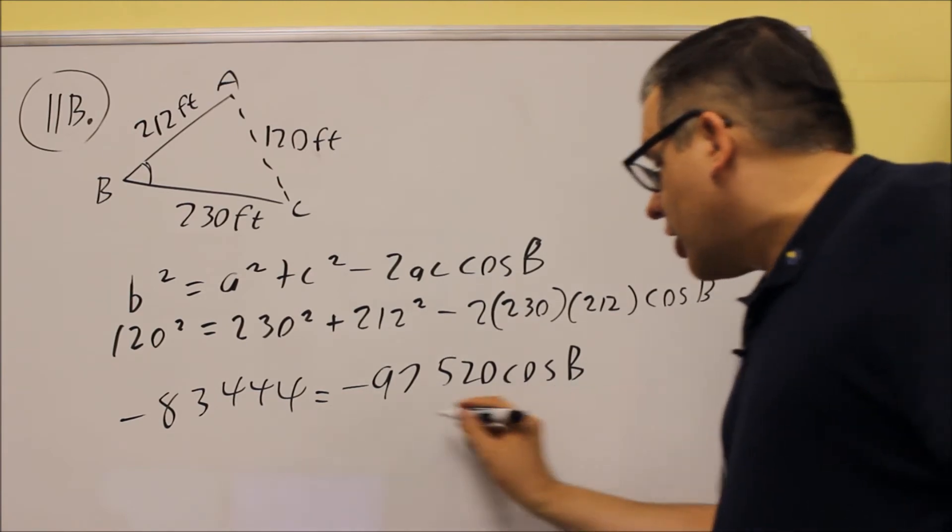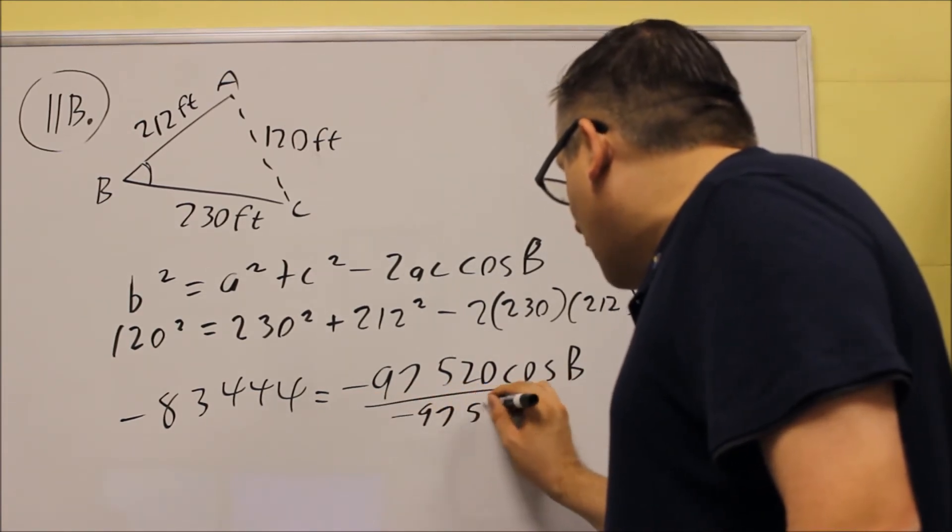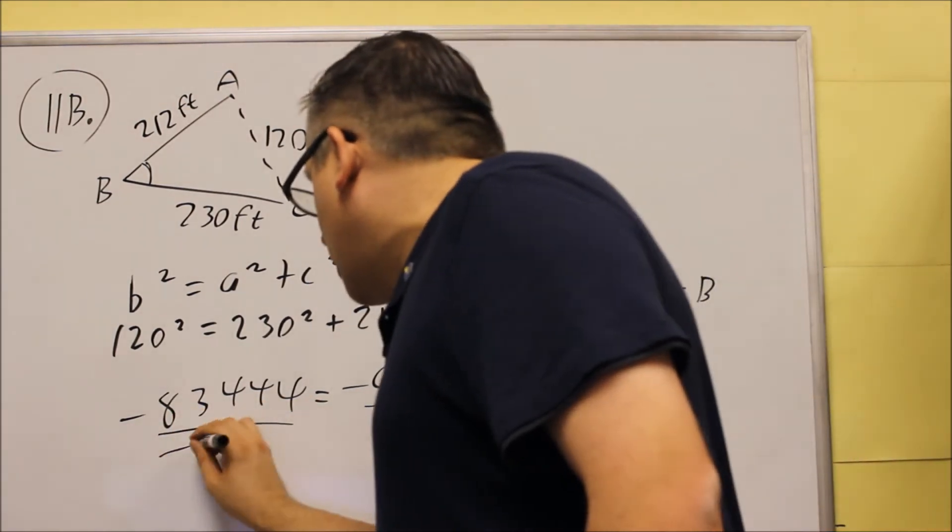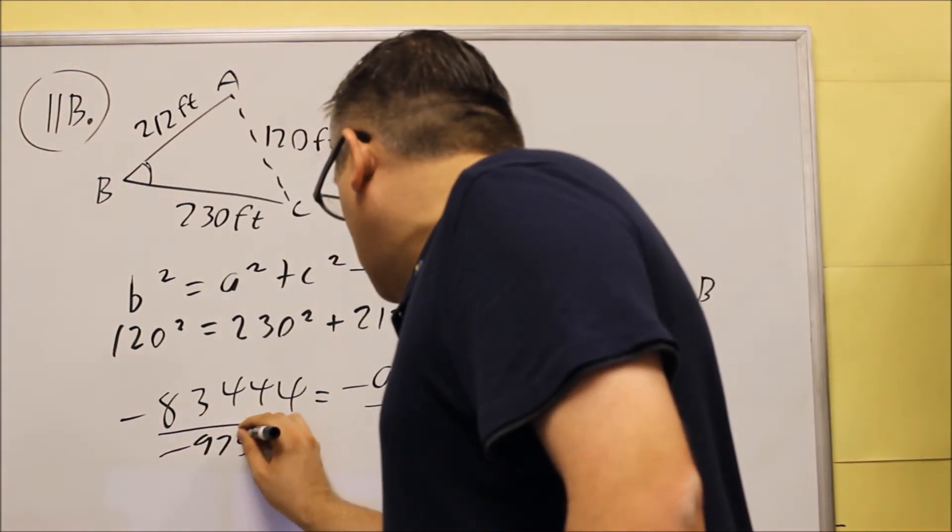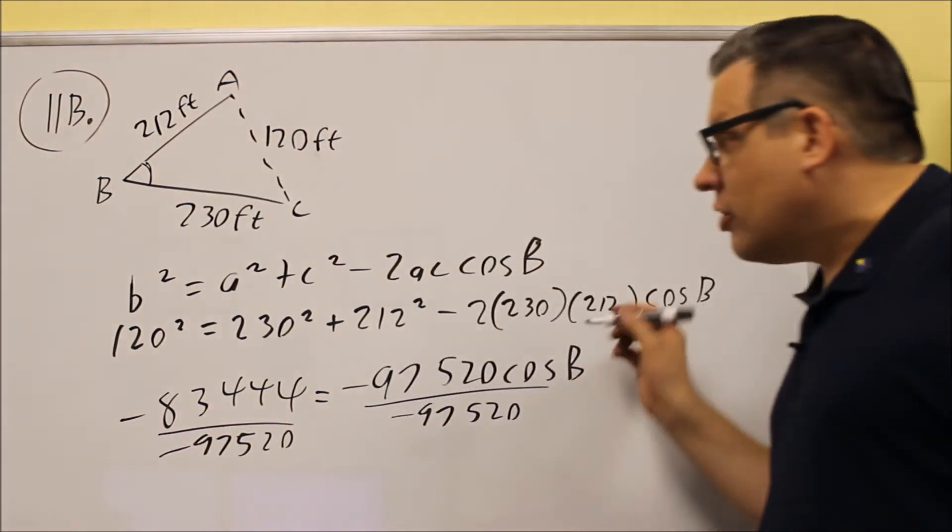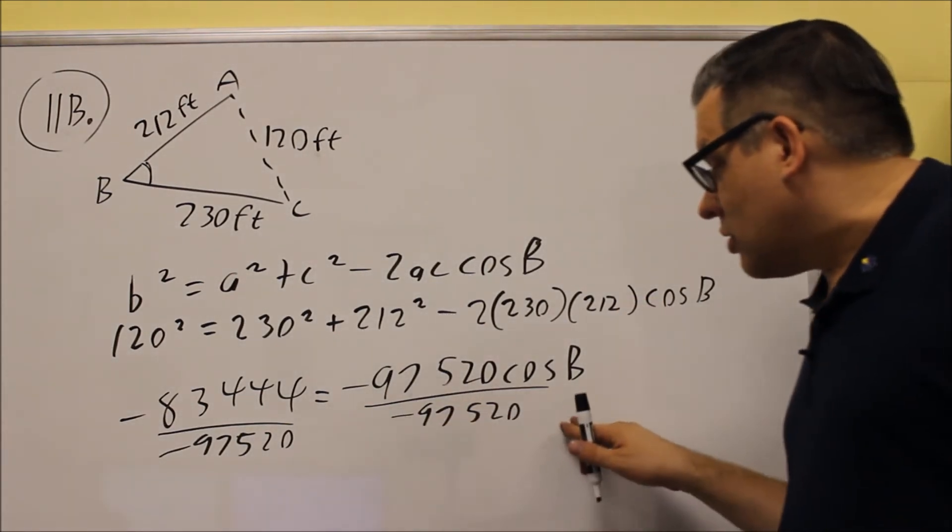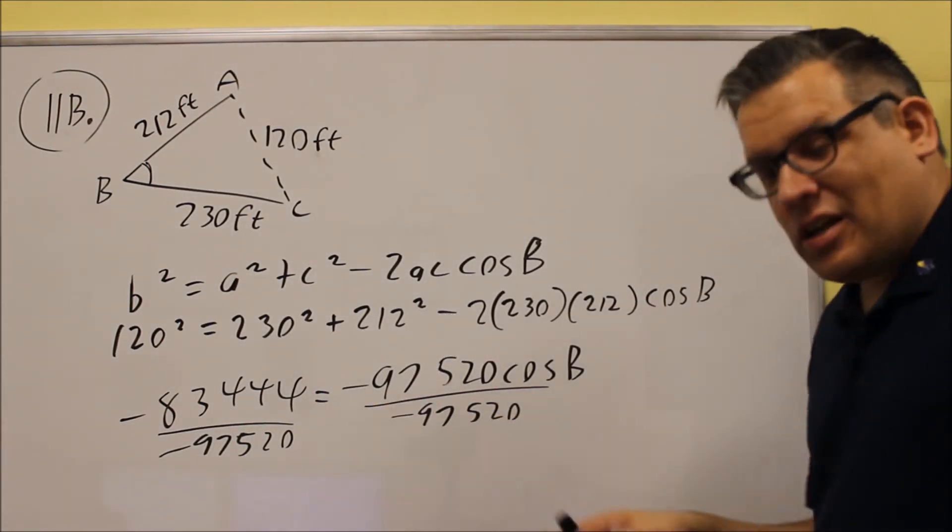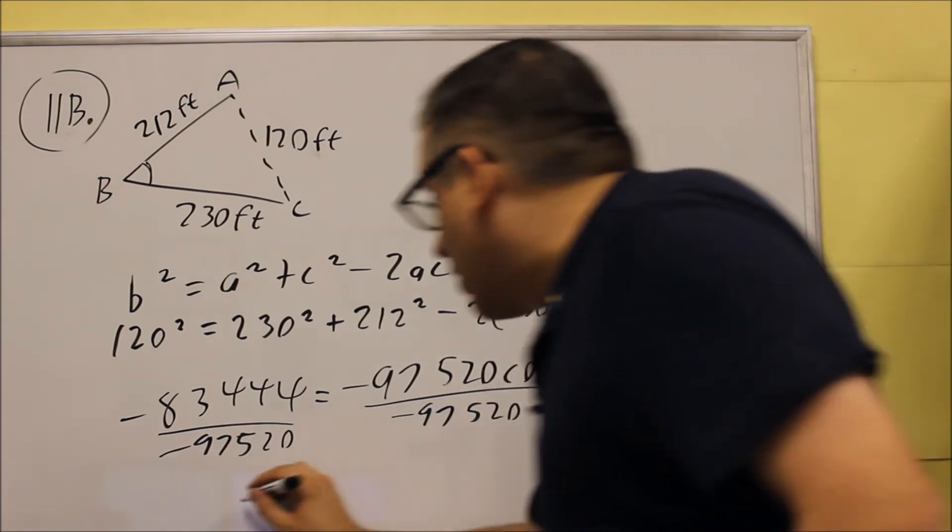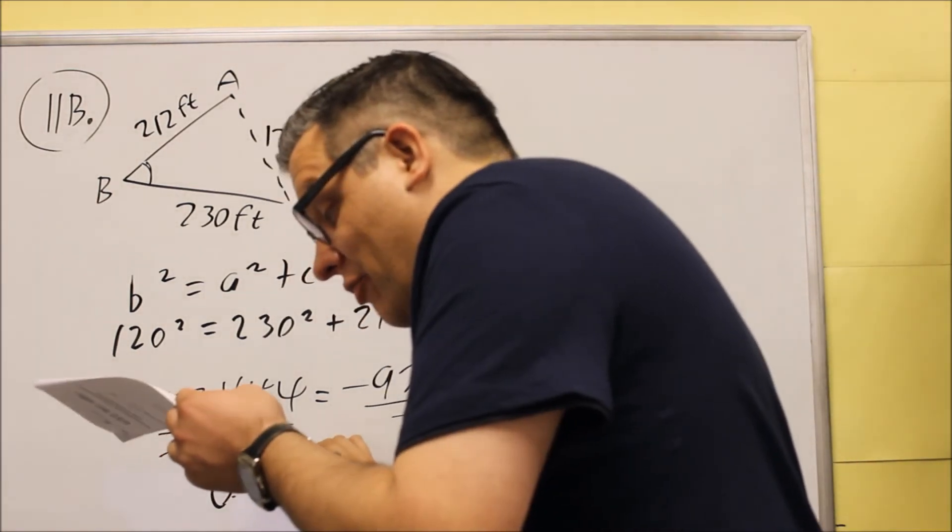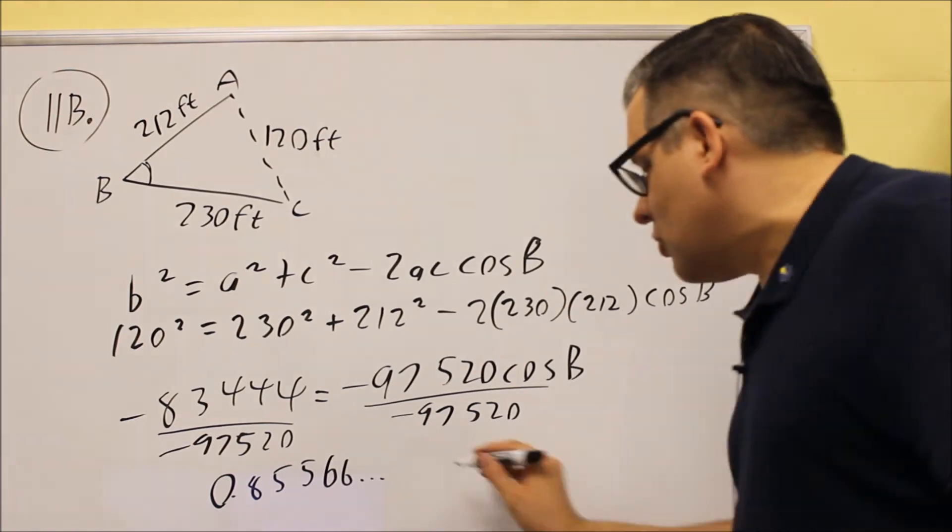We want to solve for cosines B, so we're going to divide both sides by 97520. And, by doing that, that's going to give us our answer for cosines B. So, we're going to put that into the calculator. You're going to get 0.85566 with some more decimals.